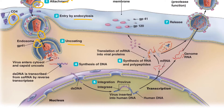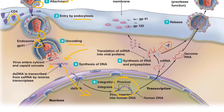GP41 integrating into the host cell membrane allows a cool trick during uncoating: it can open up and allow the nucleocapsid to be released. Cellular proteases degrade the nucleocapsid and expose the single-stranded RNA, which is then subjected to reverse transcription by reverse transcriptase, making a double-stranded DNA copy. That copy enters the nucleus through nucleoporins, and the integrase enzyme causes it to integrate somewhat randomly into one of the host cell's chromosomes.